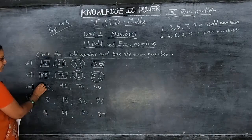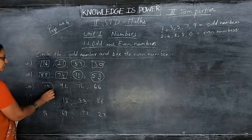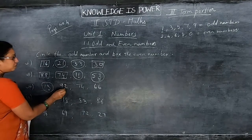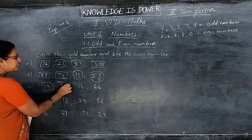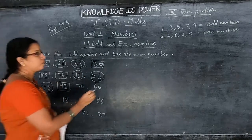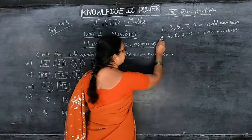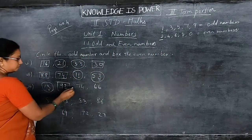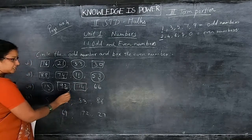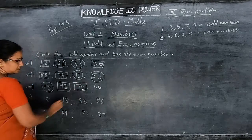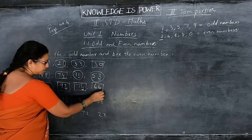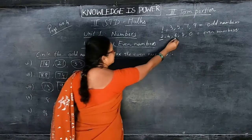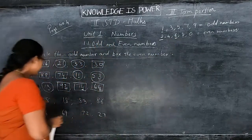Next, 13 is an odd number, so you circle it — 3 is in the 1's place. Then 92: in 1's place, 2 is there, so that is an even number. 74: in 1's place, 4 is there — this is also an even number. Then 66: in 1's place, 6 is there — so that is an even number.